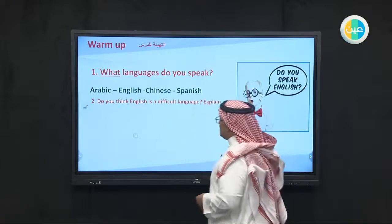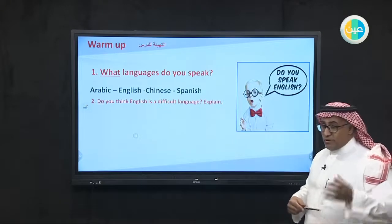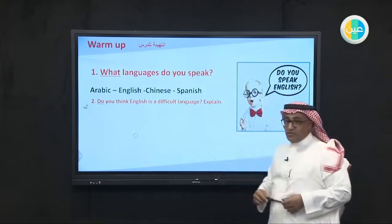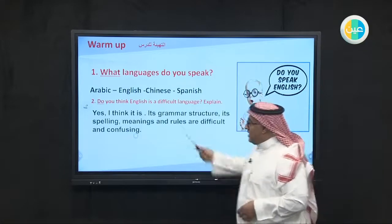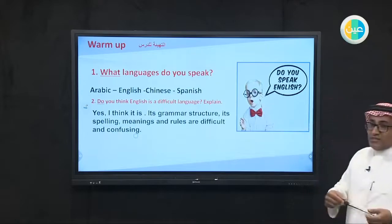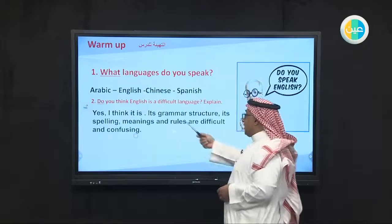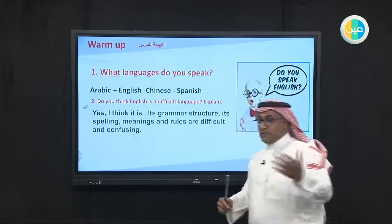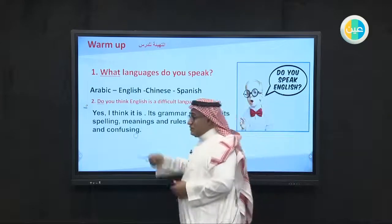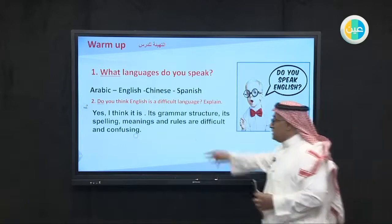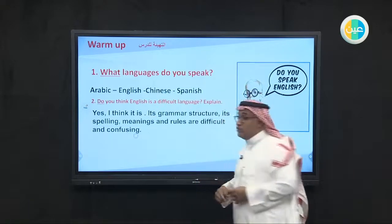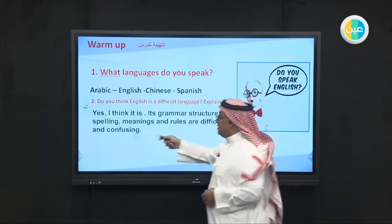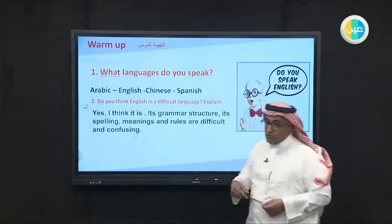Question number two: do you think English is a difficult language? For you as students, some of you think English is a difficult language. Why? It's the grammar structure — verb, noun, prepositions, adjective, adverb, how to start and end the sentence. It's spelling and dictation. Meanings and rules are difficult and confusing. All these skills — grammar, writing, meaning, rules — are difficult and confusing for you.